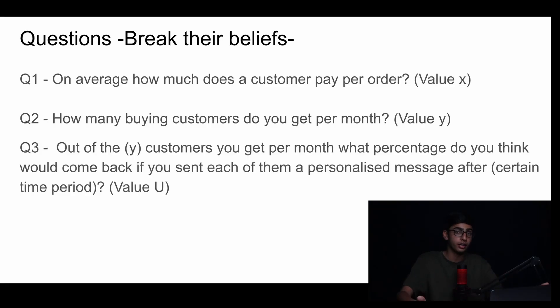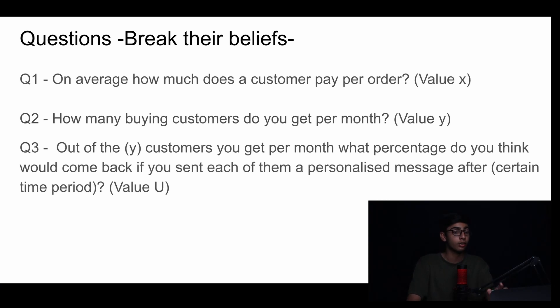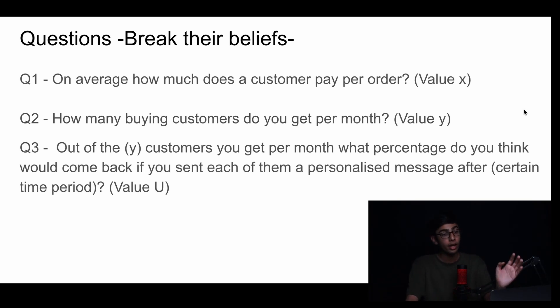The reason you're asking this question — valued as U — is because you're asking them to give you the information so you can do the calculations for them. What you get out of this is: the order value (value X), the buying customers per month (value Y), and the percentage out of those customers that would buy (value U). This is where you'll actually understand what I'm trying to get at.